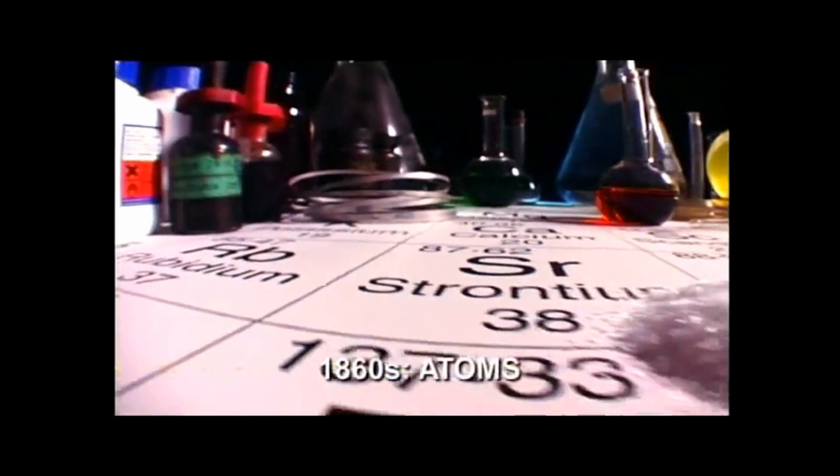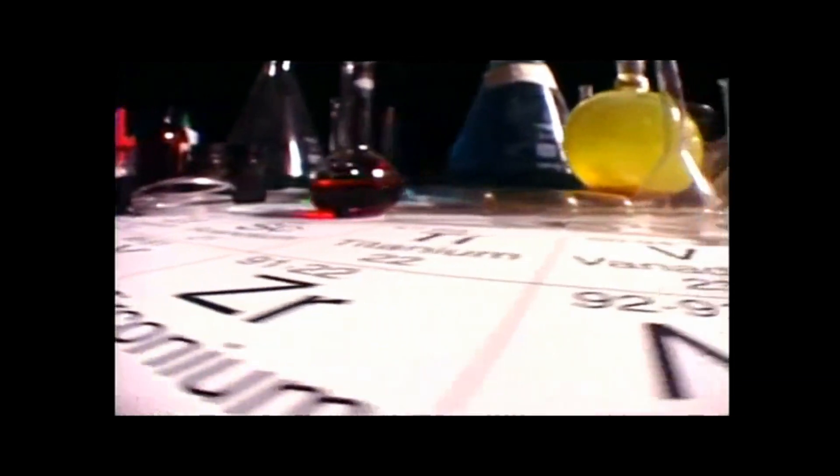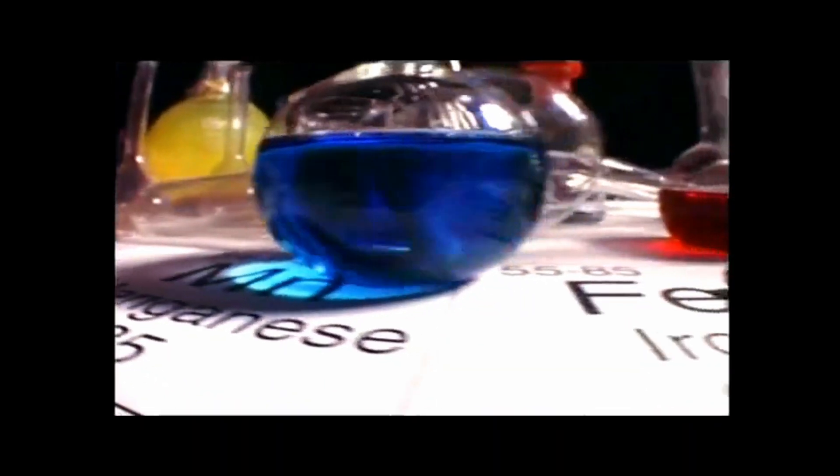Back in the 19th century, scientists thought that everything on Earth was made of just over 80 elements. These elements were famously arranged in a periodic table by Dmitry Mendeleev. At the time, it was thought that elements were made of indivisible spheres called atoms.